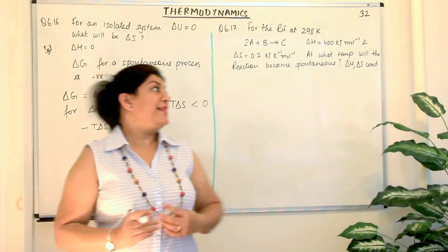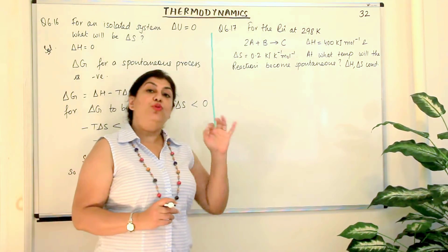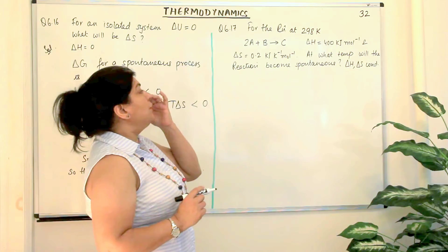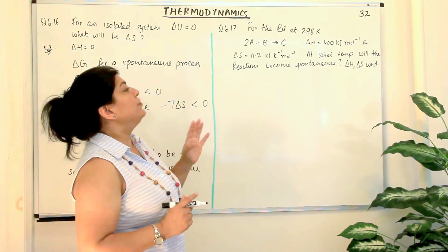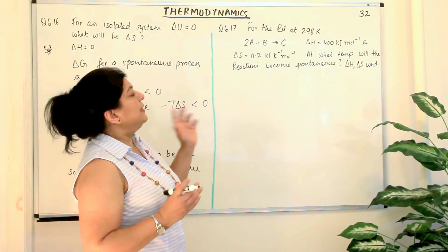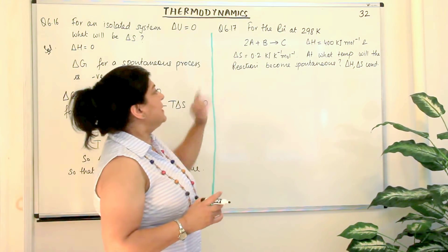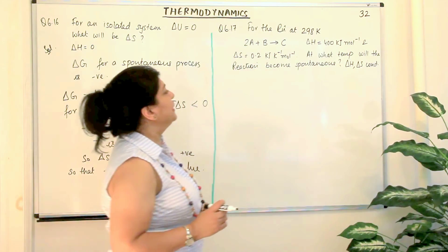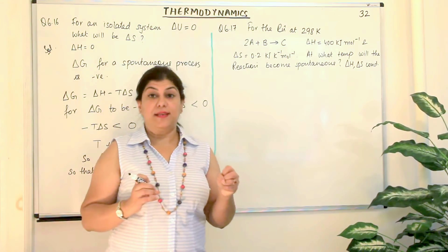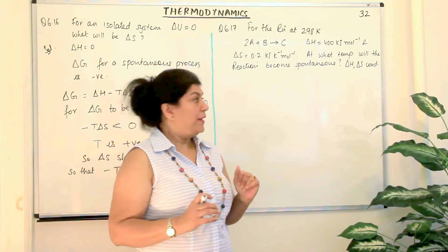Let us now move on to question 17. For the reaction at 298 Kelvin — and 298 Kelvin is the temperature under standard conditions — the reaction is 2A plus B gives you C. It's a hypothetical equation. The enthalpy of this reaction is positive 400 kilojoules per mol, and delta S is given as 0.2 kilojoules per Kelvin per mol. At what temperature will the reaction become spontaneous? You are considering delta H and delta S to be constant for a wide range of conditions.